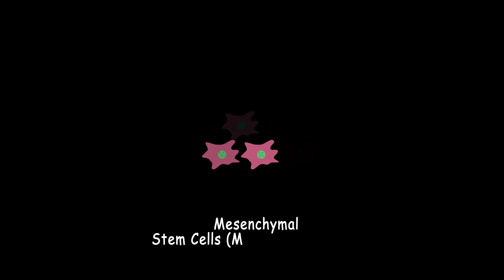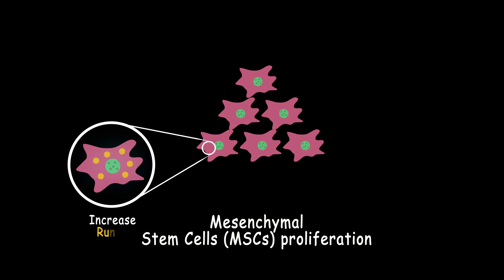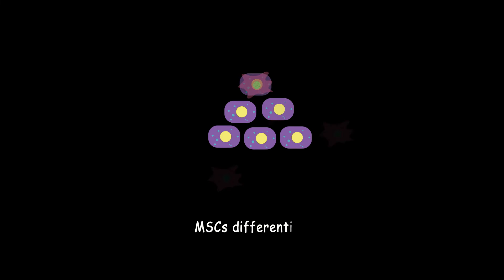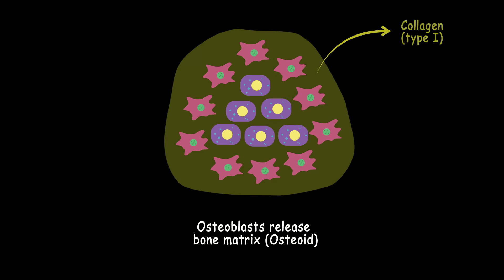Intramembranous ossification starts with the signaling molecules called bone morphogenic proteins which increase the expression of Runx-2 in mesenchymal stem cells. Expression of this factor induces their differentiation into osteoblasts. These cells make the bone matrix which consists of collagen type 1.